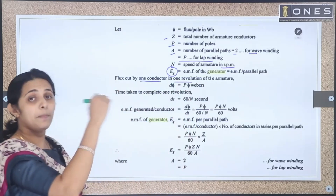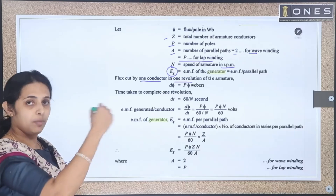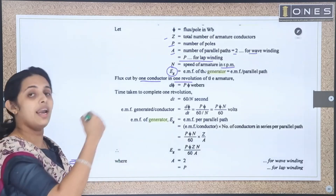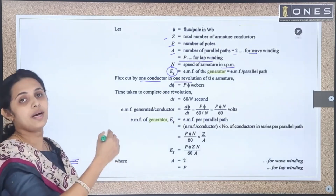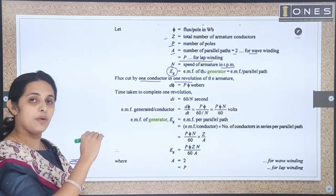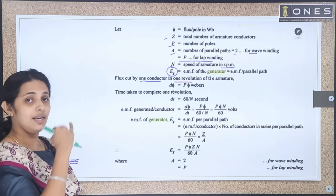So, flux cut by one conductor in one revolution: because we have all the poles in one revolution, it equals P into φ. So the flux cut per conductor per revolution is P × φ.